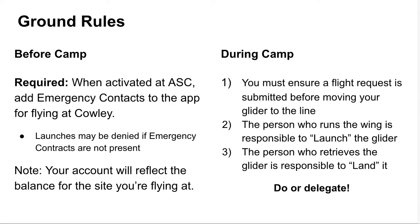Some of the ground rules that the Cowley administrators have asked to be communicated: before the camp starts, please create an account with Take Up Slack. When your account is activated, that means your registration payment has been processed. Please add emergency contacts to the app for flying at Cowley. The administrators may, during this camp or future camps, deny launches if emergency contacts are not present in the app.